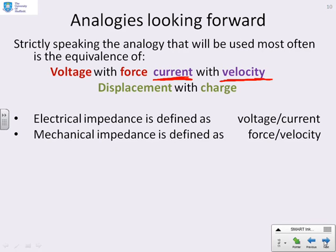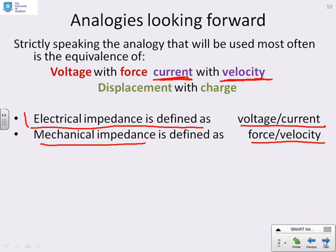One reason for that is electrical impedance is defined as voltage over current, whereas mechanical impedance is defined as force over velocity.